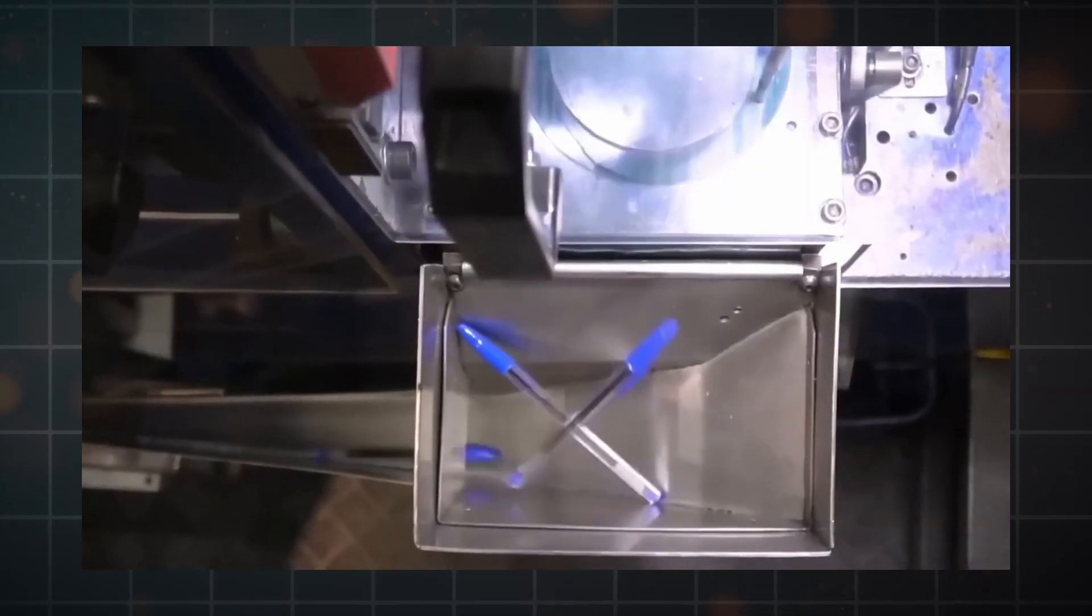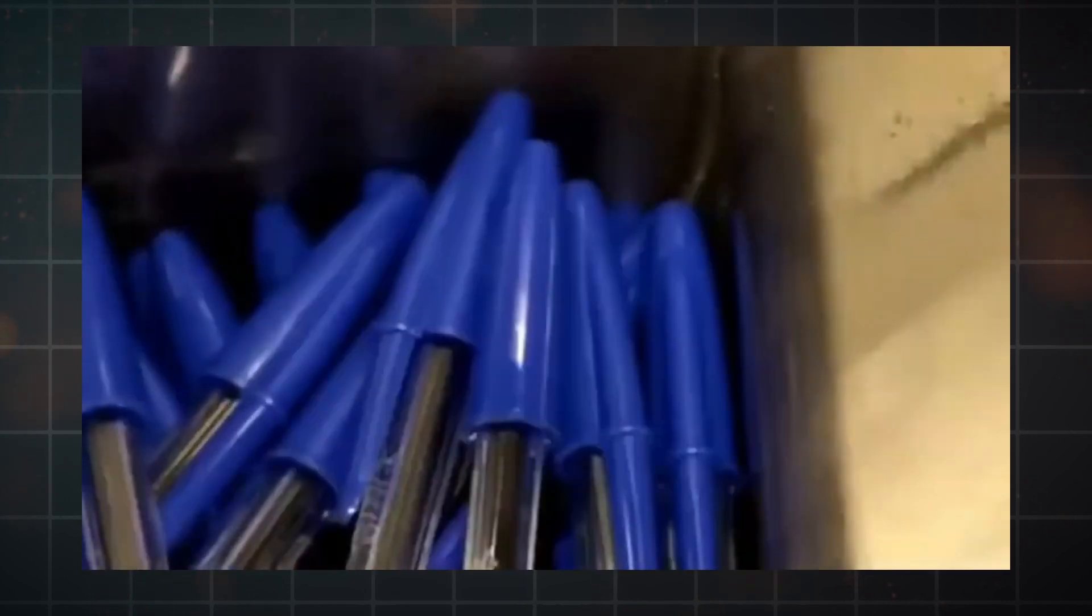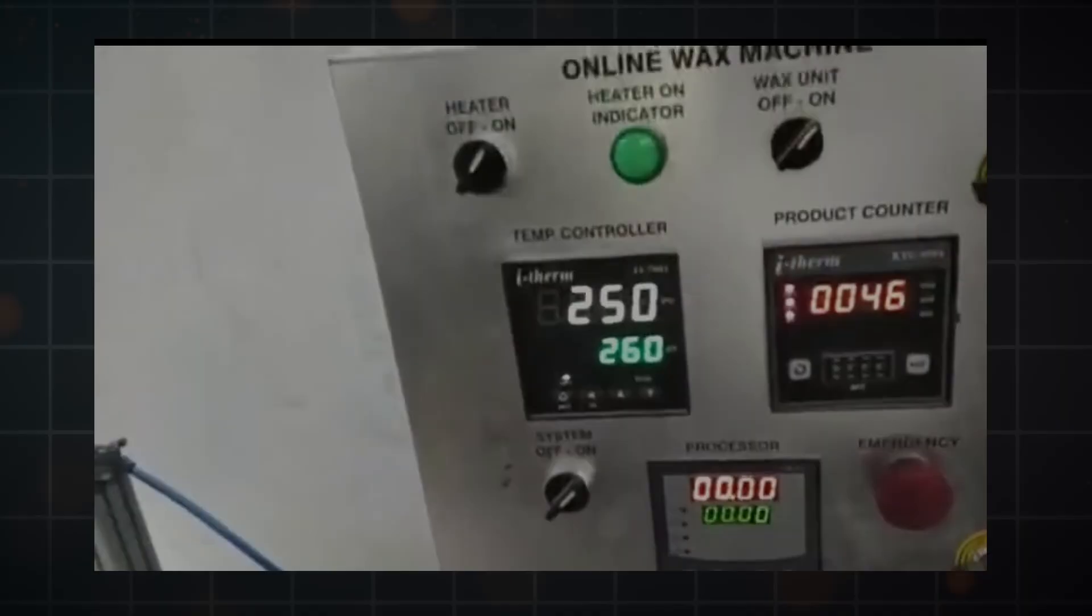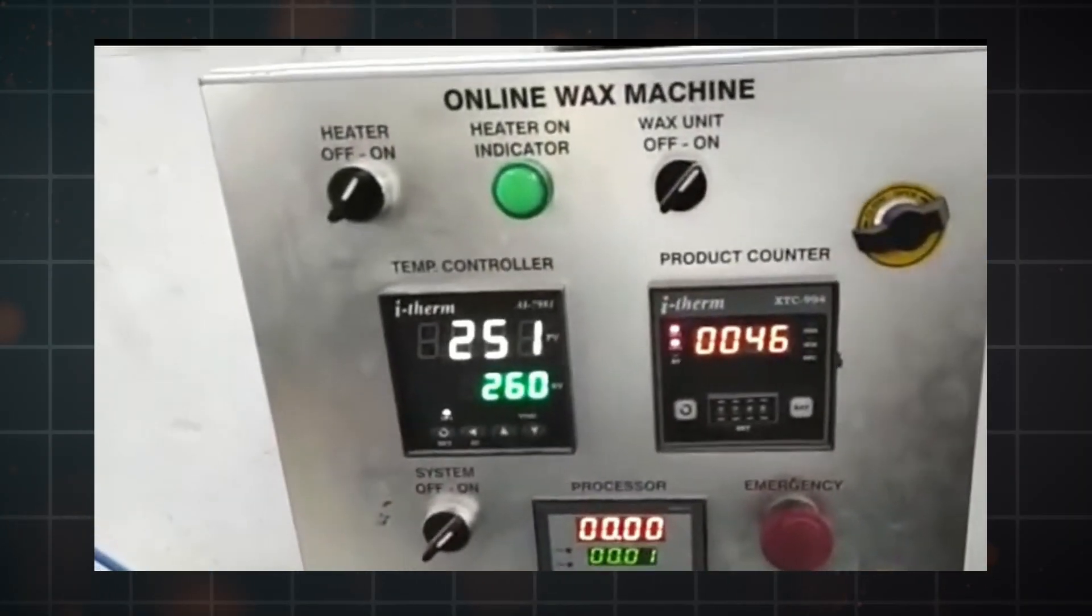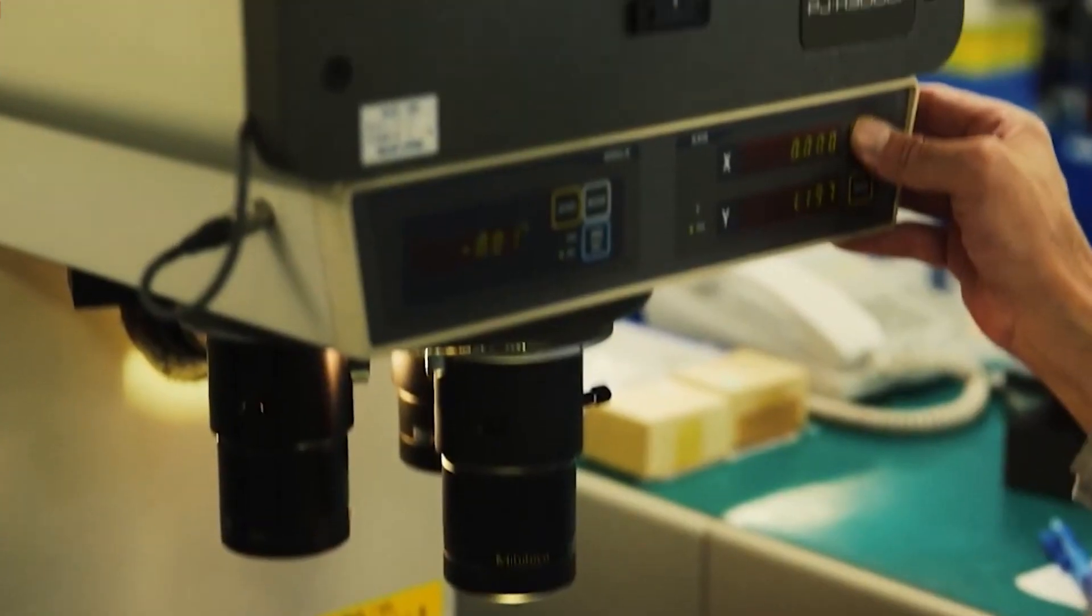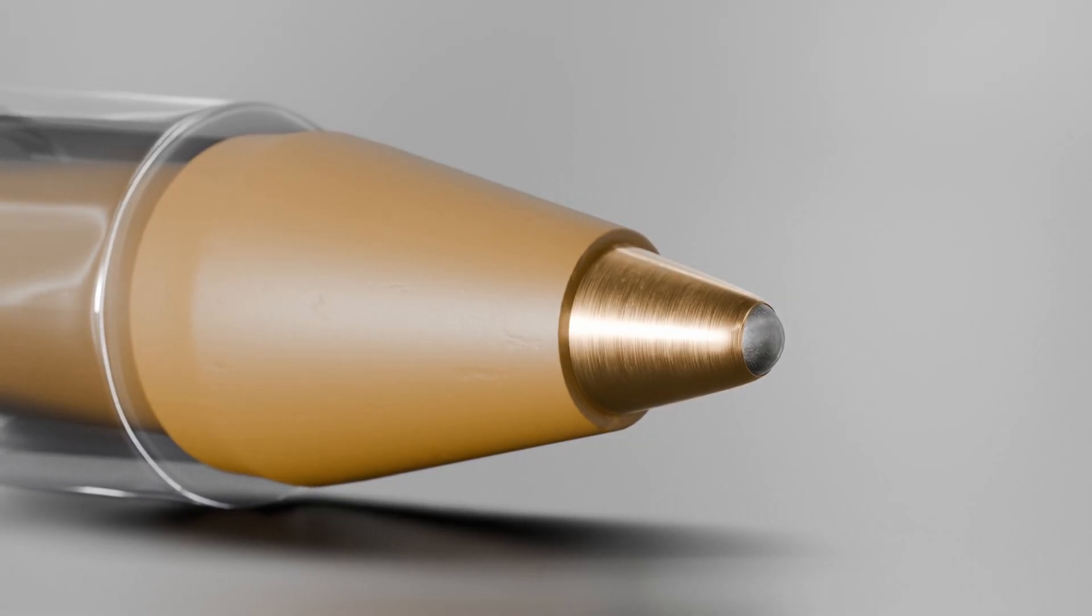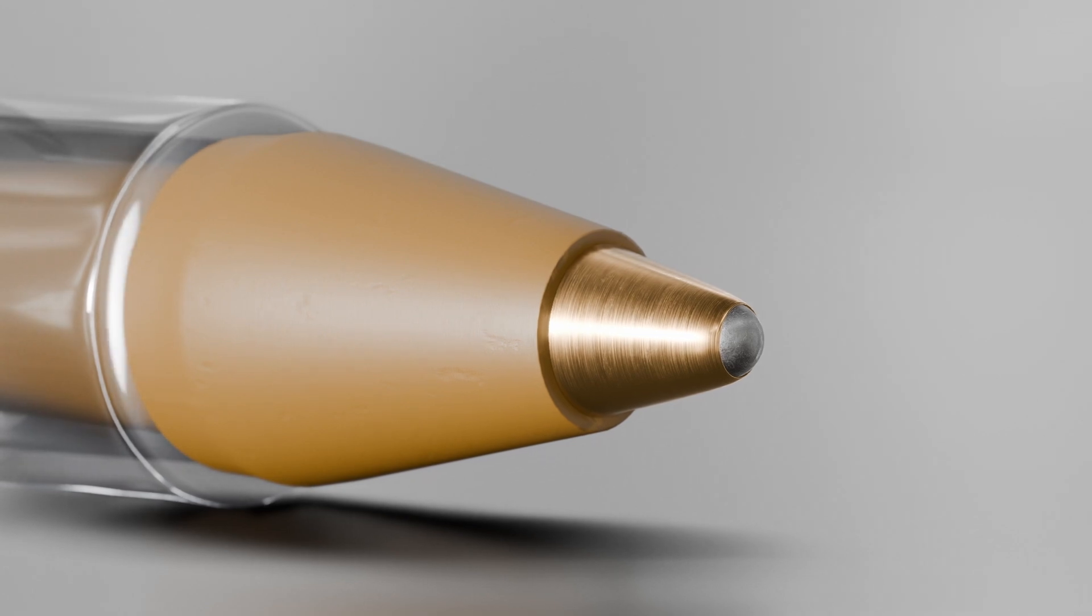Pens are also checked to see how well they hold up against wear and weather conditions. This could mean putting the pens through a range of temperatures and humidity levels to make sure they can handle different weather conditions. These kinds of tests are very important because they make sure the pen will always work no matter where it is.